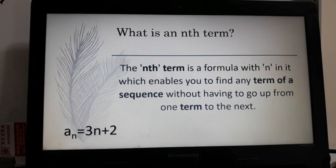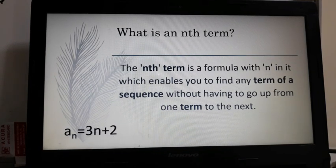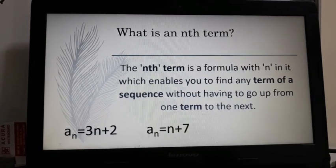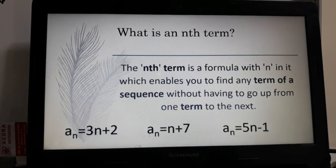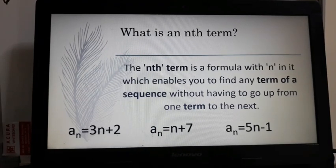First, examples of an nth term: a_n equals 3n plus 2, a_n equals n plus 7, a_n equals 5n minus 1.